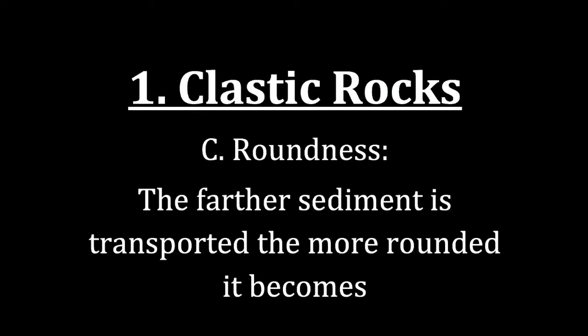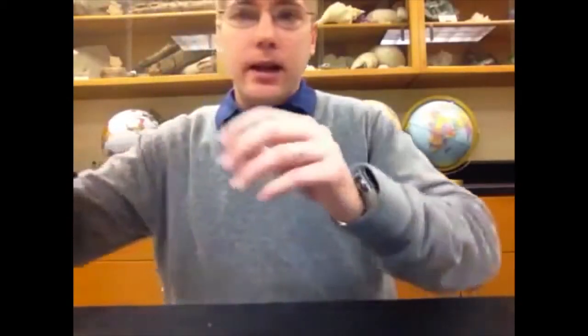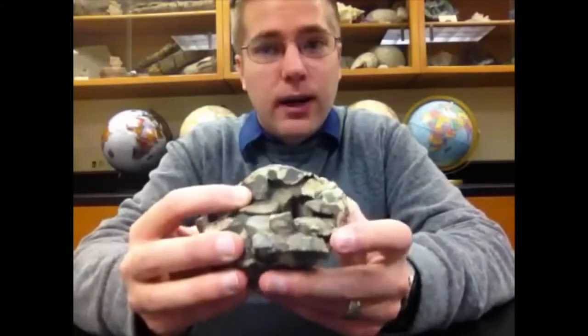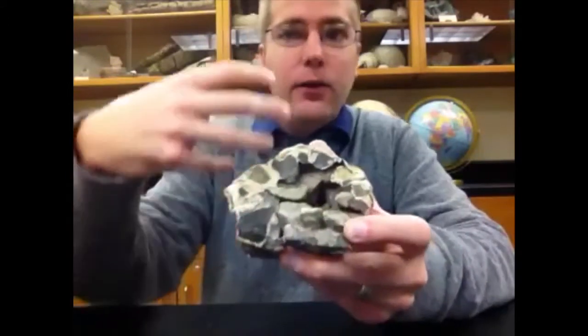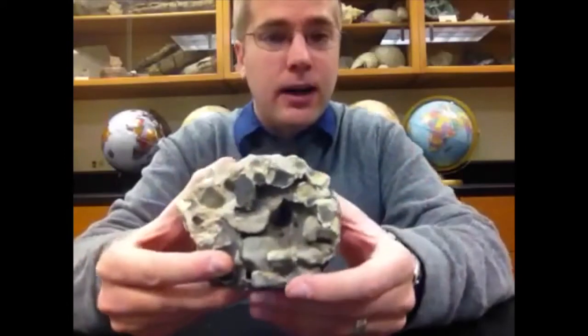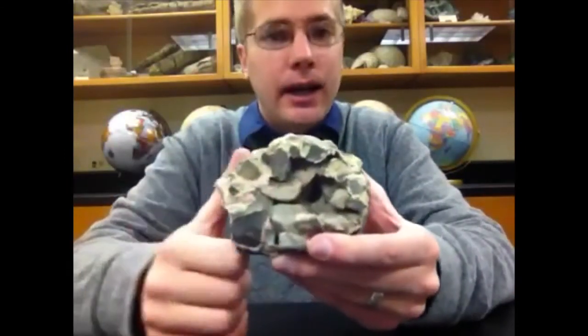The last clastic rock property that we can garner information from about the environment is the roundness of the individual grains making up the rock. The farther the sediment has been carried or transported from the source — again, from the mountain typically — the more rounded it becomes. If we are very near the source and gravity has pulled the material down the mountain, the individual grains have not hit against each other much. Therefore when they first break they are very sharp, very jagged, and they retain that angular shape.